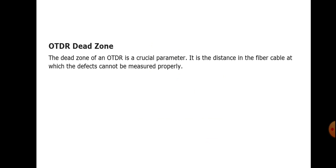An important point in the case of OTDR is the dead zone. The dead zone of the OTDR is a crucial parameter — it represents the distance in the fiber cable at which defects cannot be measured properly. At that point, we cannot measure the defects correctly.